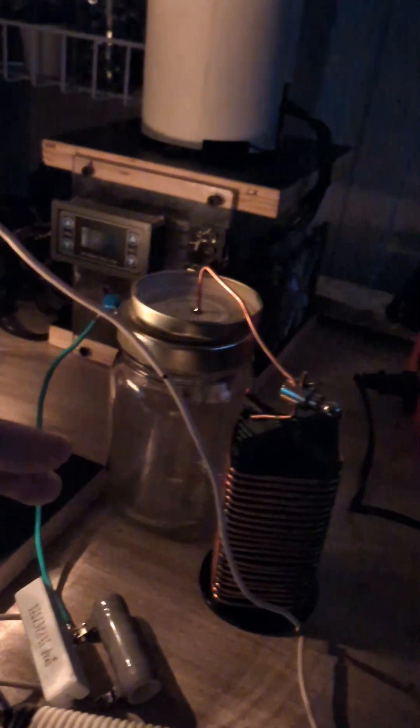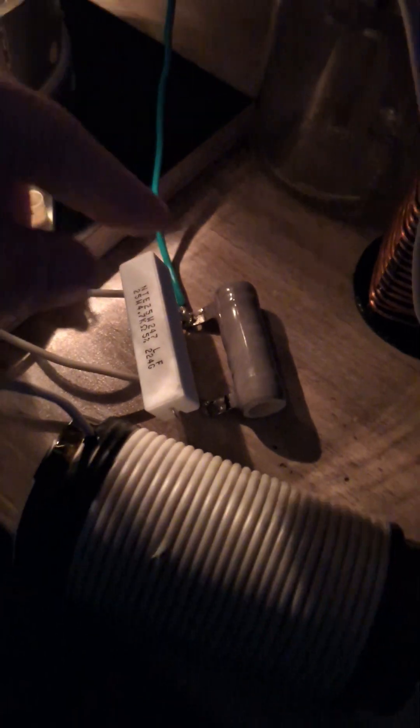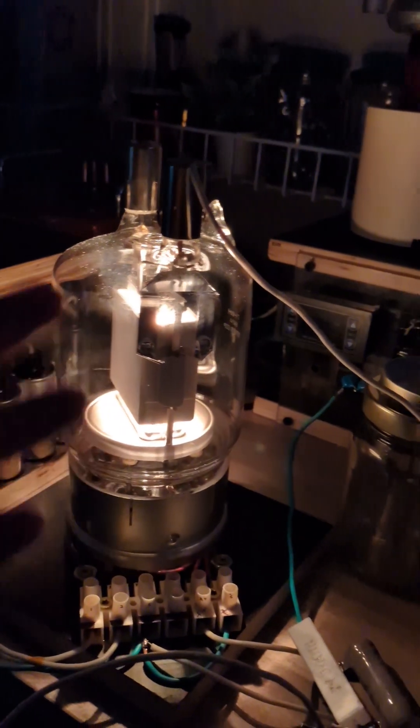These two blue things are the capacitors that protect the circuit just in case there's an arc-over between these two jam jar lids. Here are the grid leak resistors - this is just to ensure there's a safe voltage on the grid. Anyways, let's give this thing a go.